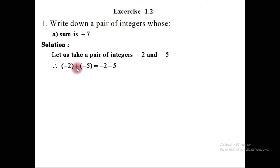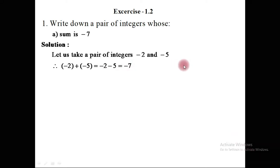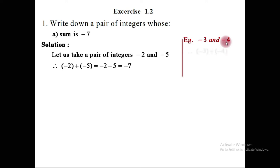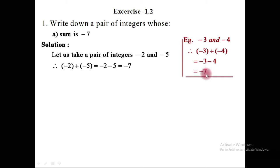Minus and plus multiply becomes minus, so both integers are negative. Minus 2 and minus 5 are integers of the same sign, so they are added. The sum of 2 and 5 is 7, taking the common sign minus, giving minus 7. Another example: the sum of minus 3 and minus 4. Both are negative, so we add: 3 plus 4 is 7, giving minus 7.